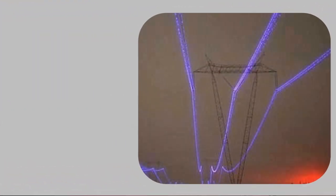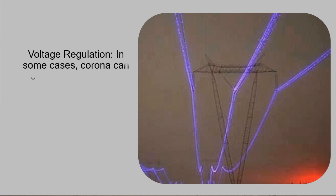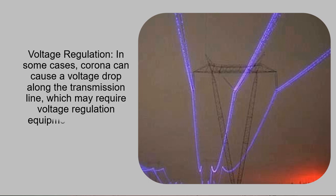Voltage regulation: In some cases, corona can cause a voltage drop along the transmission line, which may require voltage regulation equipment to maintain the desired voltage levels.